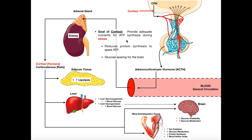Before we get into the functions of cortisol, we want to first understand how cortisol is actually released, and also why it's released. We're going to start out here in the hypothalamus. The hypothalamus is going to generate a hormone called CRH — corticotropin releasing hormone. CRH then moves into this network of blood vessels called the hypothalamic-hypophyseal portal system, which carries CRH all the way down to the anterior pituitary gland. It's here that CRH stimulates the anterior pituitary to release a tropic hormone called adrenocorticotropic hormone, which we abbreviate ACTH.